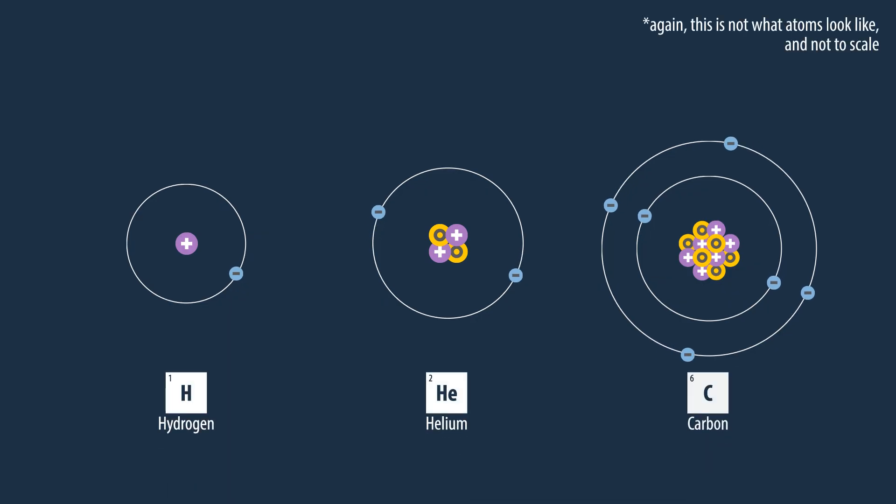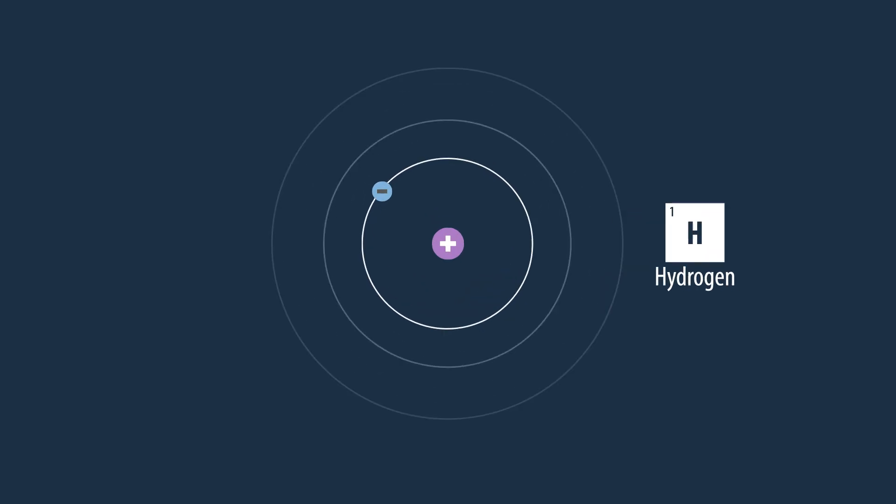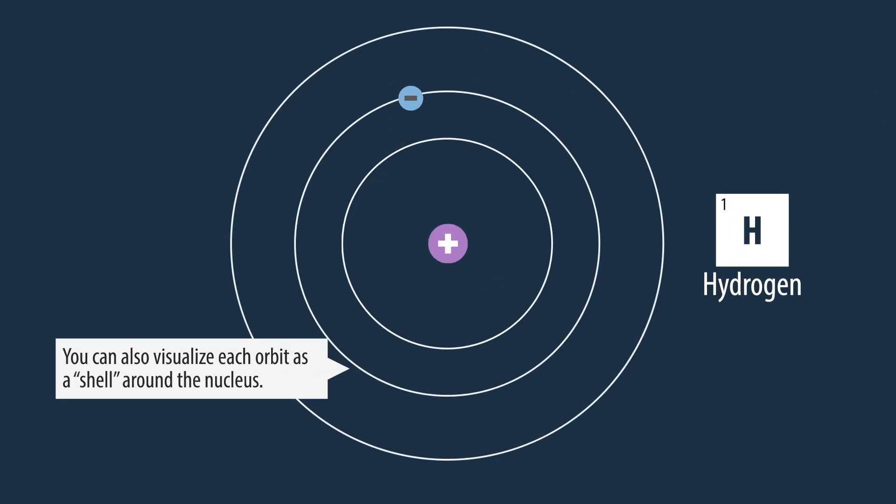You may be familiar with these representations of atoms using the Bohr model, with electrons orbiting their nuclei like planets. Depending on the electrons' energy, they are shown at certain higher or lower orbits.